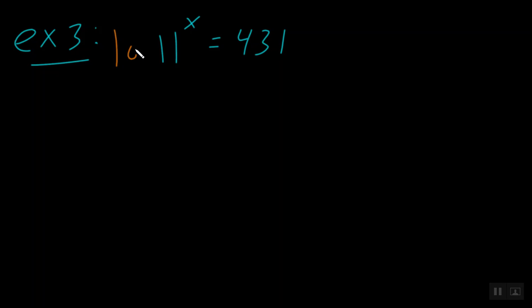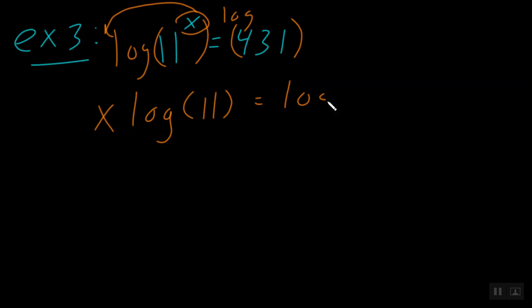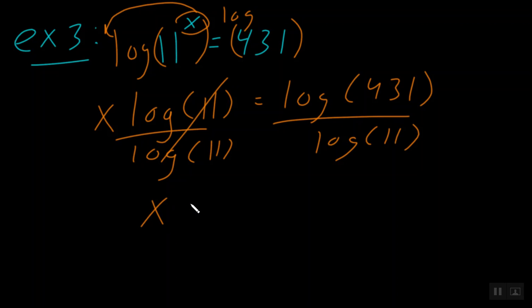So remember, to get that exponent out of the exponent, we're going to take the log of both sides. And this x gets to come on down. So we'll write x log of 11 is equal to the log of 431. And notice from here, we're going to divide both sides by the log of 11. And we get x is equal to log base 11 of 431.